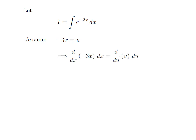Taking the differential of both sides, we get the differentiation of minus 3x with respect to x, into differential of x, is equal to the differentiation of u with respect to u, into differential of u.